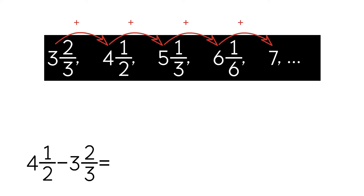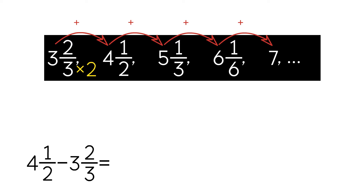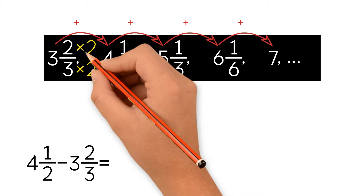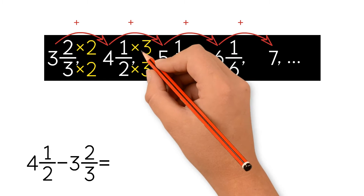The least common multiple between 2, 3, and 6 is 6, so the common denominator is going to be 6. For the first mixed number, we multiply the denominator and the numerator by 2. For the second mixed number, we multiply the denominator and the numerator by 3.